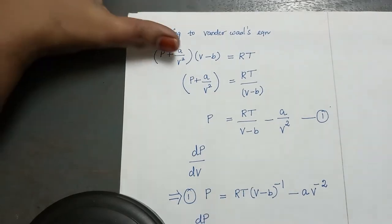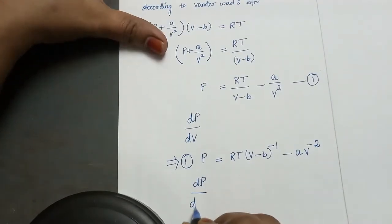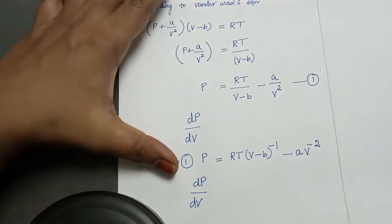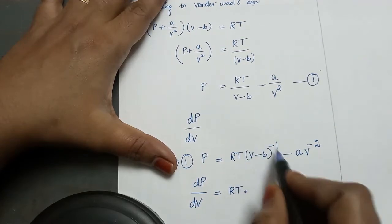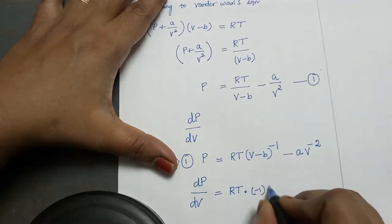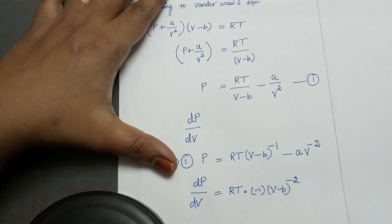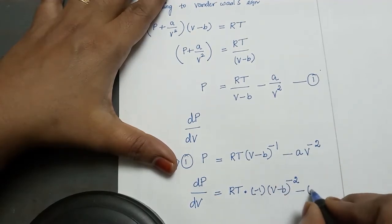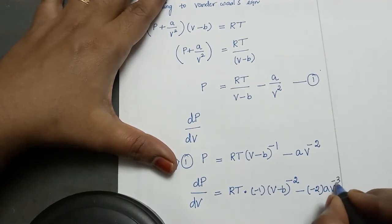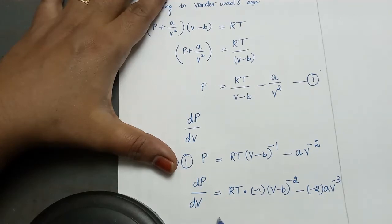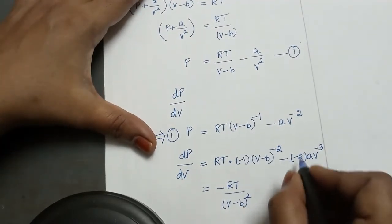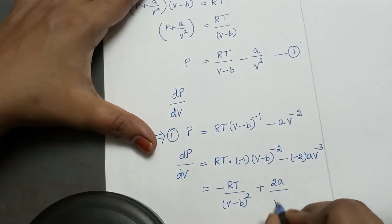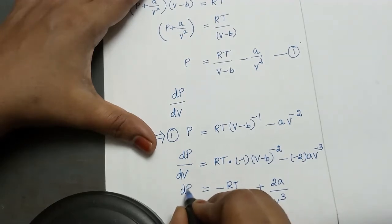Now let us find dp by dv, the change of pressure with respect to volume. R and T are constants. Differentiating: the first term gives minus 1 into (v − b) to the power minus 2, and the second term gives minus(minus 2)a·v to the power minus 3. Rearranging, dp/dv equals minus RT divided by (v − b)² plus 2a divided by v³.